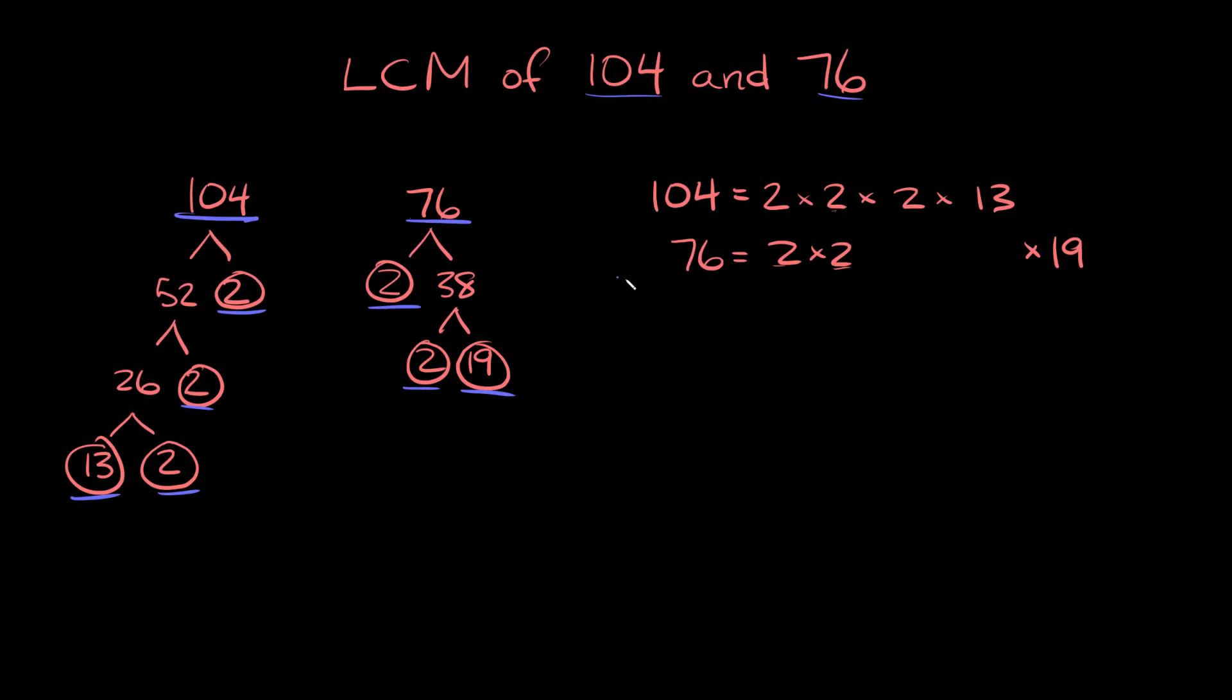So now here I'm going to kind of multiply them all together vertically. So we're going to say the least common multiple of 104 and 76 is equal to. Now we're going to bring these numbers down vertically. If you have the same number twice, so here we have a 2 and here we have a 2, you're only going to write it down once.